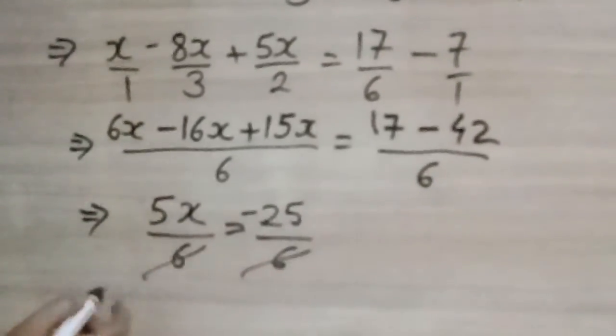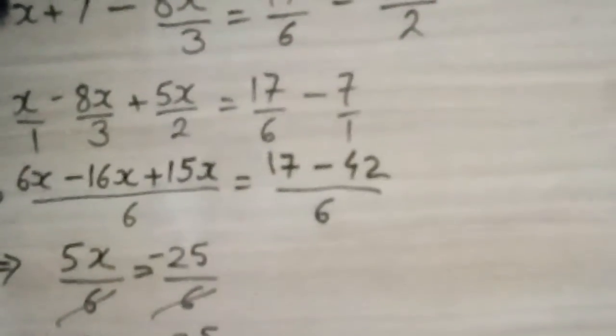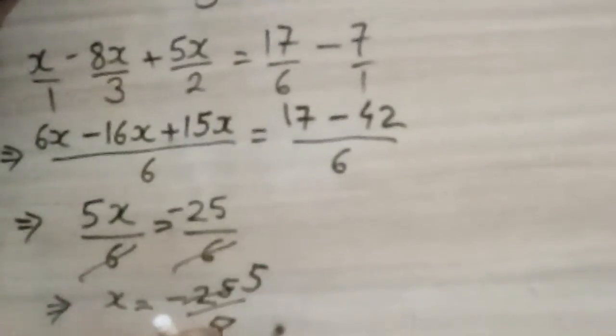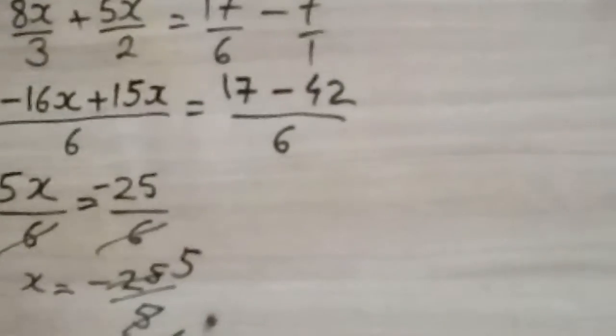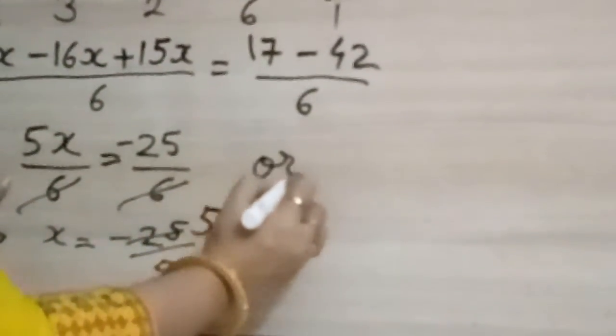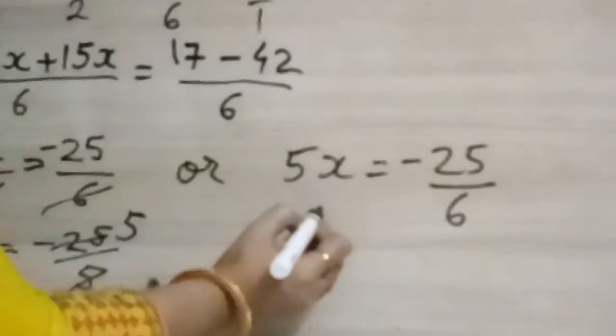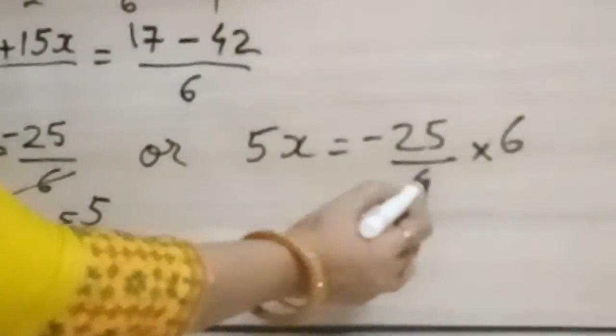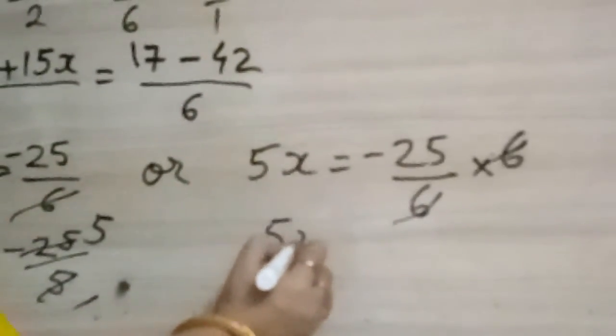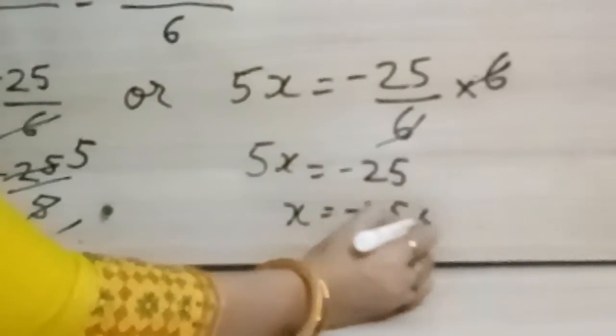Now if we want we can cancel also because the terms are having only single terms and we can transpose so minus 25 upon 5 so x will come, will cancel 1x and 5 is minus 5. And here we can add. X is equal to minus 25 by 5.